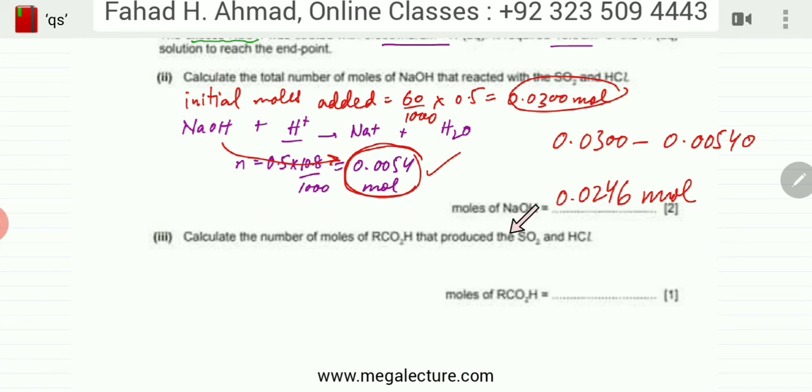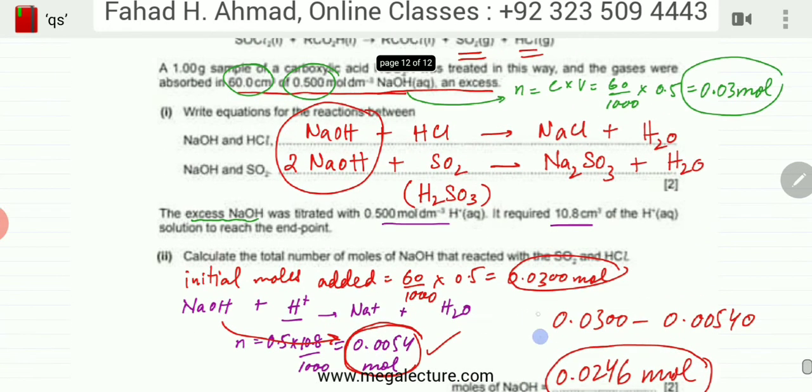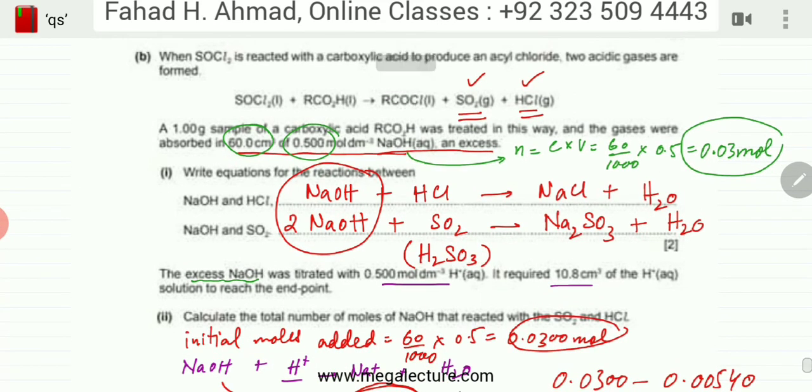In the third part you have to calculate the number of moles of carboxylic acid that produced SO2 and HCl. I now know that 0.0246 moles took part in the reaction. If you look carefully at these equations, HCl and SO2 were neutralized with NaOH. If you combine the two equations, the HCl and SO2 produced in the first reaction are being neutralized by NaOH.